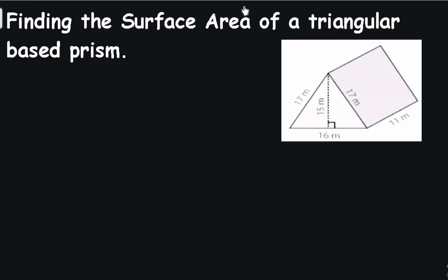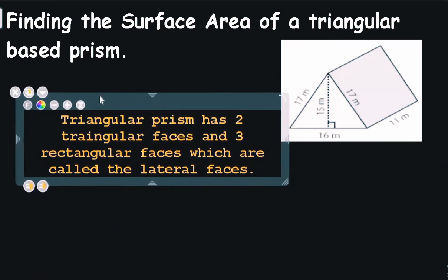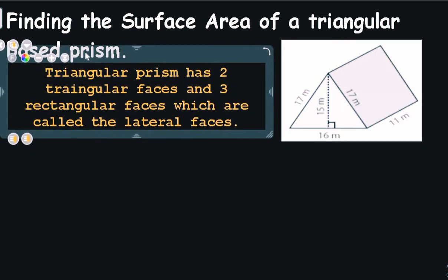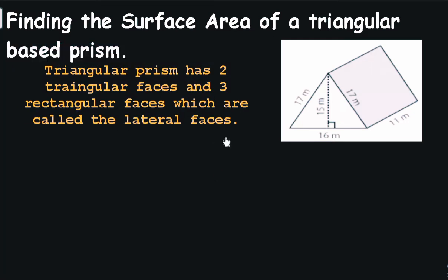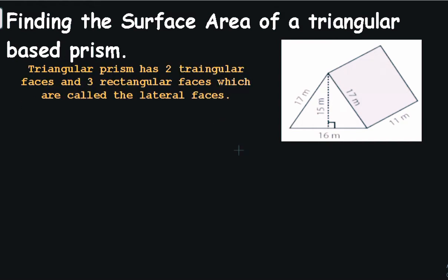Finding the surface area of a triangular based prism — there are two faces, the top and bottom face, that are going to be the triangles — the triangular faces. And there are three rectangular faces which are also called the lateral faces. So if I want to find the surface area of this triangular prism, I need to find the area of 5 two-dimensional shapes.